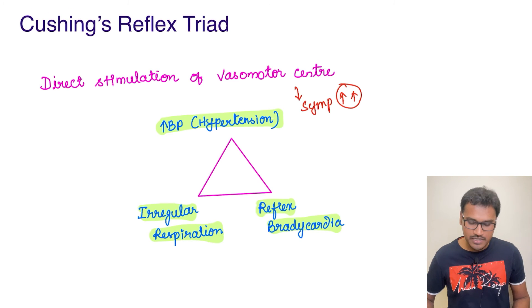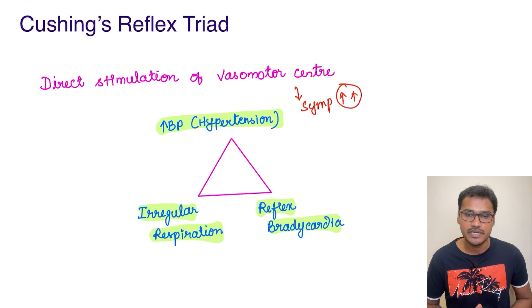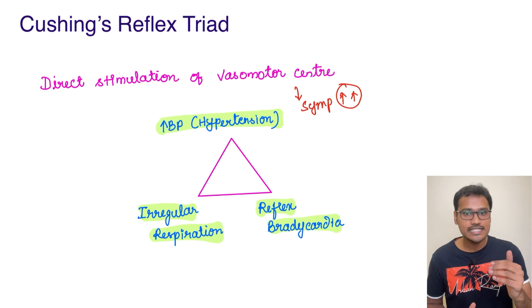Three things are going to happen in Cushing's reflex: increased BP (hypertension), reflex bradycardia, and irregular respiration. This is due to the increased CSF pressure. I hope it's clear.